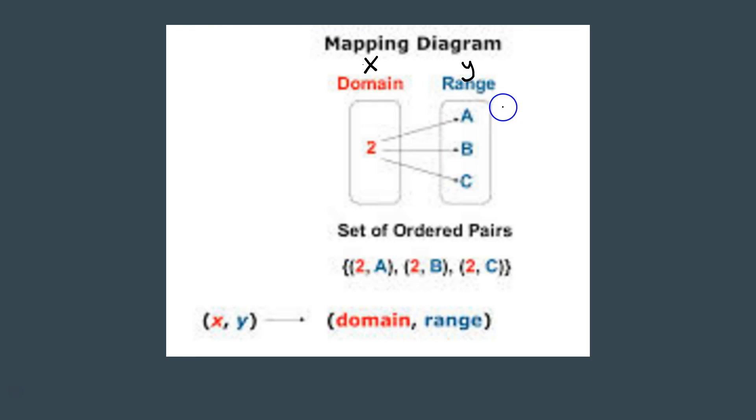Just like everything else, our ordered pairs, we have to write it in alphabetical order, x and then y. And just like we said here, x then y, domain, range. And this also is alphabetical, so that can help you remember it as well.